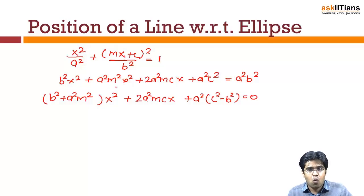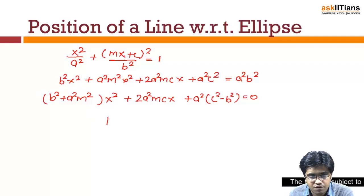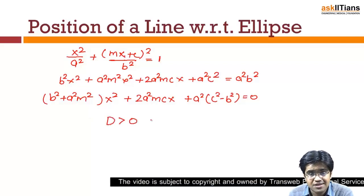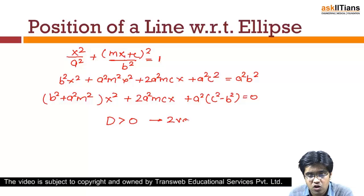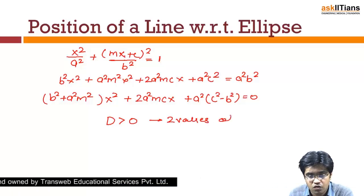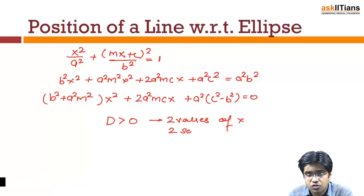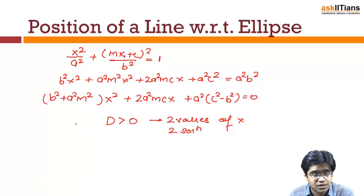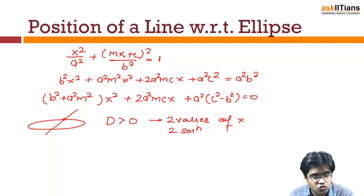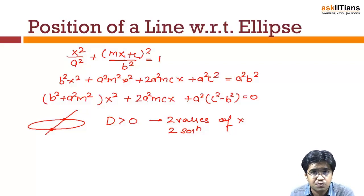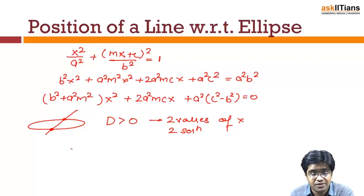If the discriminant of this equation is greater than zero, this means we have two values of x — two solutions — meaning the curve is interacting with the line at two points. Two points means it's a chord. By this method you can also find those two specific points at which the line and the curve are intersecting.